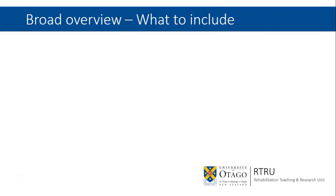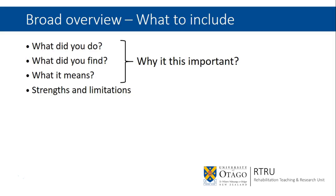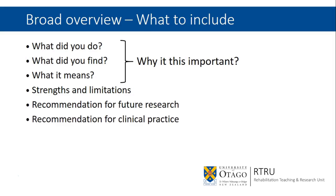To begin with, here is a broad overview about what to include in your discussion section. You want to cover what you did, what you found, what it means, and these things can be summed up to refer to why your research is important. You want to talk about the strengths and limitations of your research and make recommendations for future research. If your research is to do with health science work, you should also be talking about the implications in terms of clinical practice. Specific journals do have more explicit requirements in terms of structure, so do follow those if you're submitting a paper for publication, but in general these are the things that need to be covered in a discussion chapter.